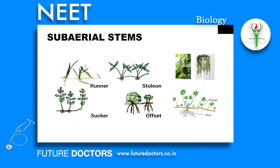Stolons are sub-aerial weak stems that are horizontal or branched runners with long internodes, which can pass over small obstacles. Example: Fragaria. Offsets are weak stems that are one internode long, stout, slender, and run horizontally, terminating in a bud at a short distance that develops into adventitious roots. Example: Pistia.